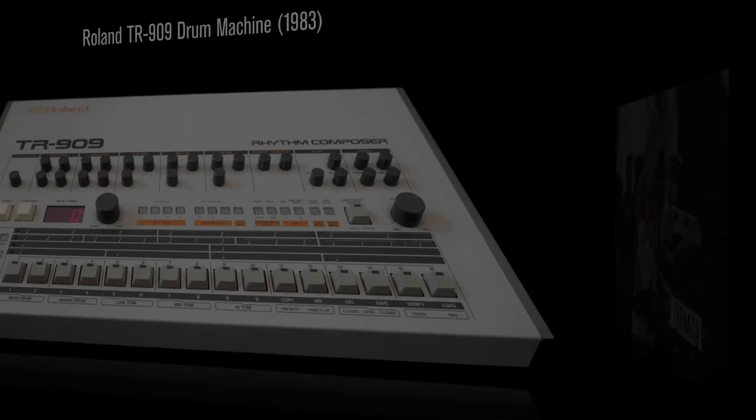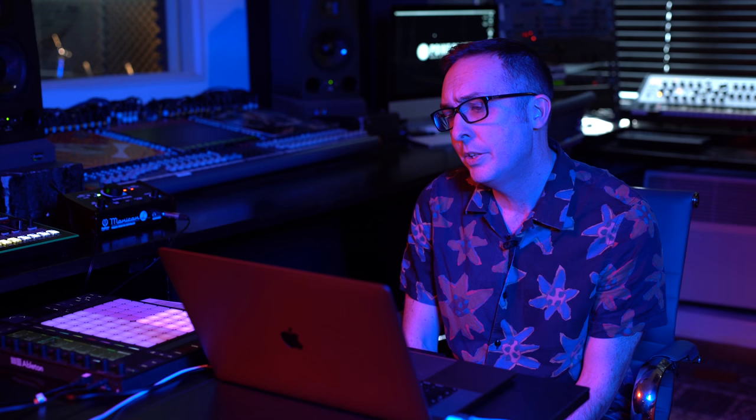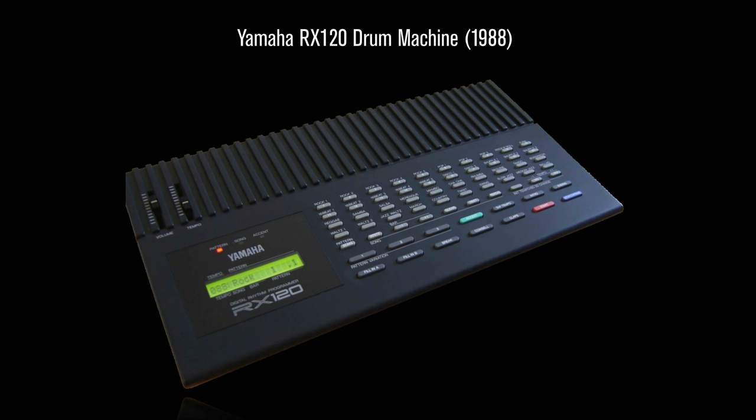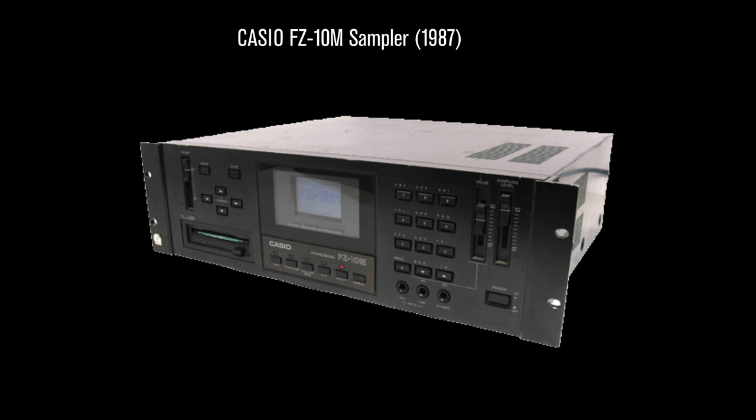Let's have a look at those bits of equipment. There's the TR-909 — a beautiful, legendary house drum machine. And then the SQ80 — this is a cross-wave synth, so it's got a combination of wavetable and some samples, but with analog filters and envelopes as well, so it sounds gorgeous. He also had a Yamaha RX120 drum machine on this particular track. And here's the Casio FZ10M sampler he used.